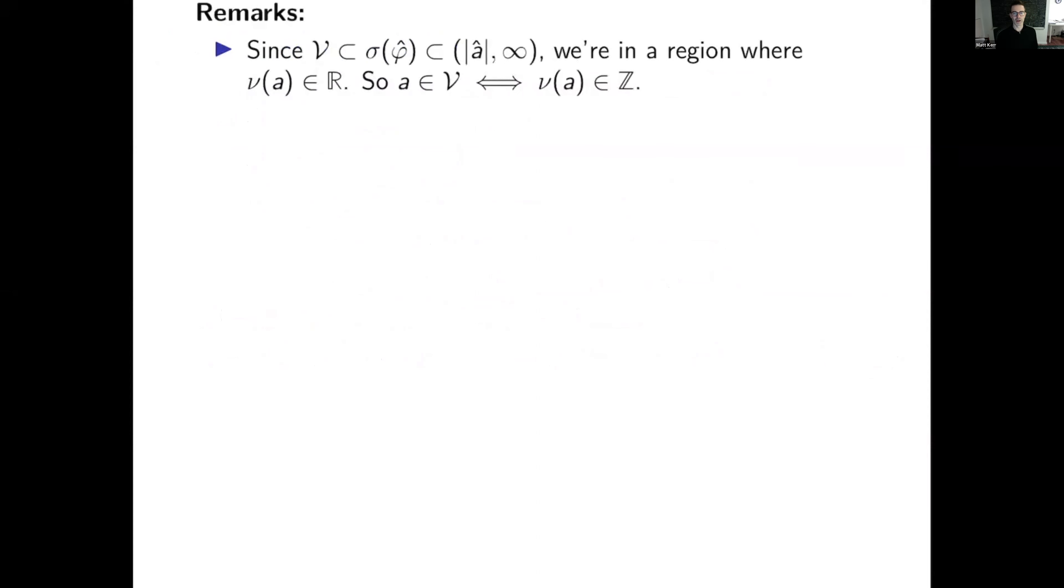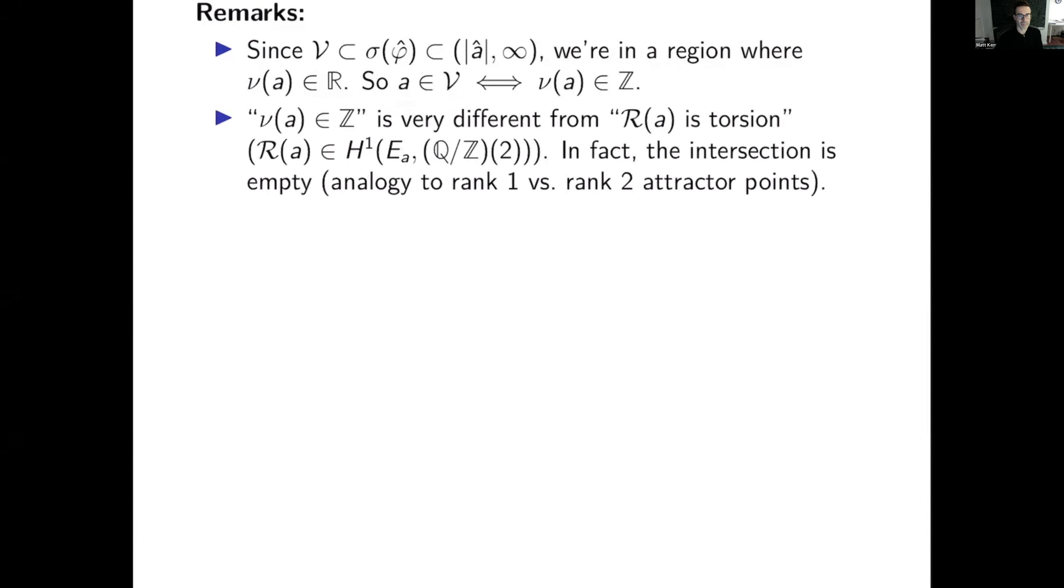Okay, so let me make some remarks before telling you about the proof in our special case. Since the attractor points are contained in the spectrum and the spectrum is contained in the set of positive real numbers, we're in a region where nu of a is in the positive real numbers, or at least in the real numbers. And so to say that nu of a is integral is the same thing as to say that nu of a is in Z of one tau, because tau is non-real. So it's also the case that nu of a in Z is very different from saying that the regulator class is torsion.